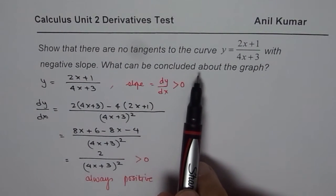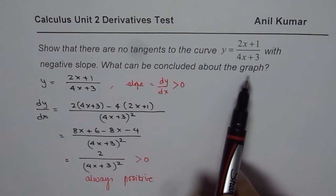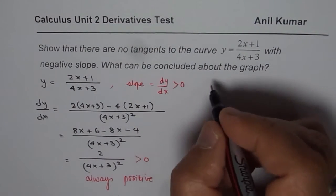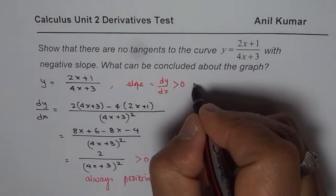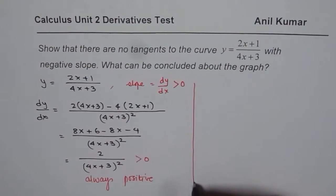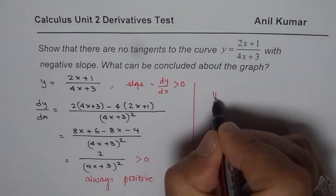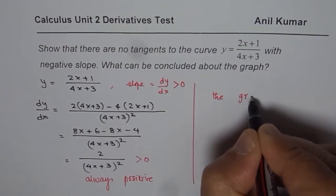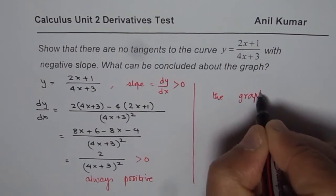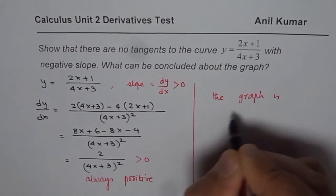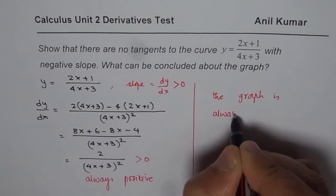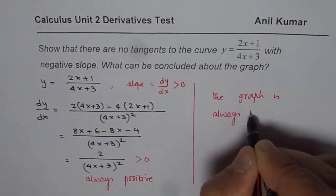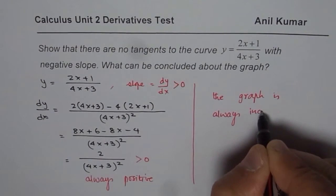Now the second part: what do you conclude about the graph? Since the derivative is always positive, the conclusion is that the graph is always increasing.